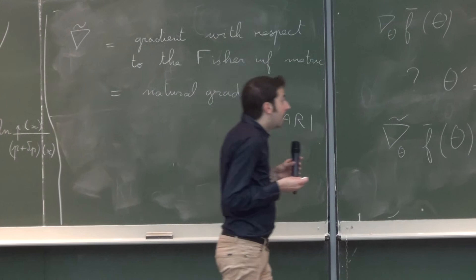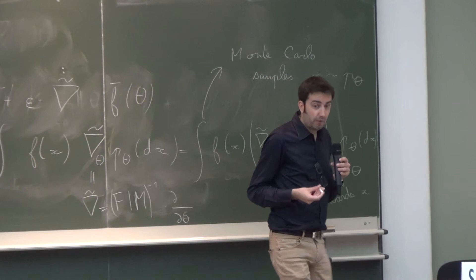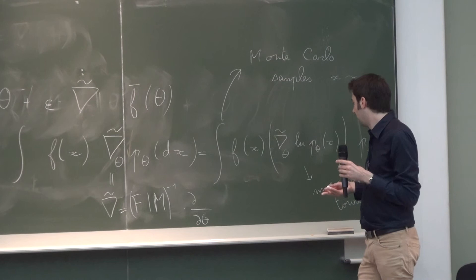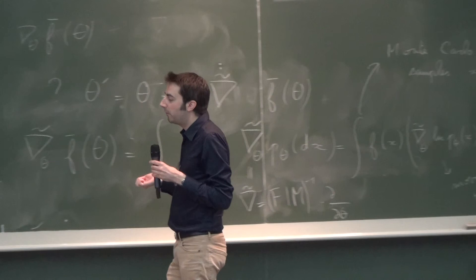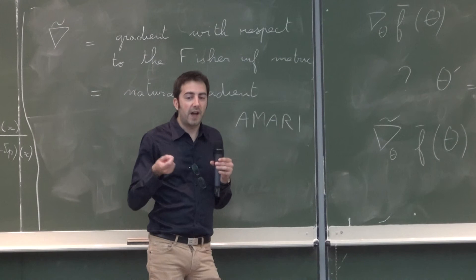In practice, we do not simply use the integral of f(x) because there is one additional invariance property you would like to have. As I mentioned, if you take the standard gradient ascent and encode x in millimeters, centimeters, or inches, it will give you different trajectories — there is no invariance there.